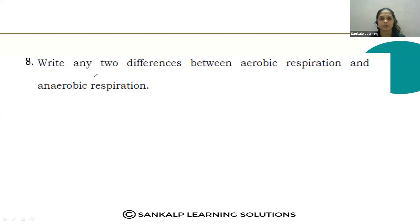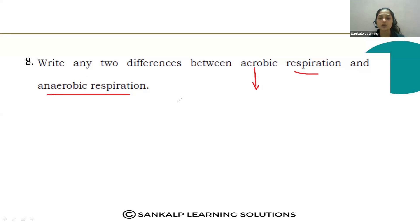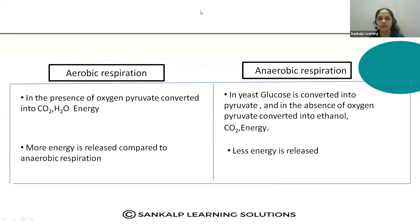Question eight: Write any two differences between aerobic and anaerobic respiration. In aerobic respiration, breakdown of the pyruvate molecule takes place in the presence of oxygen, producing carbon dioxide, water, and energy. In anaerobic respiration, in the absence of oxygen, pyruvate is converted into ethanol, carbon dioxide, and energy. More energy is released in aerobic respiration, and no ethanol is produced, unlike in anaerobic respiration.